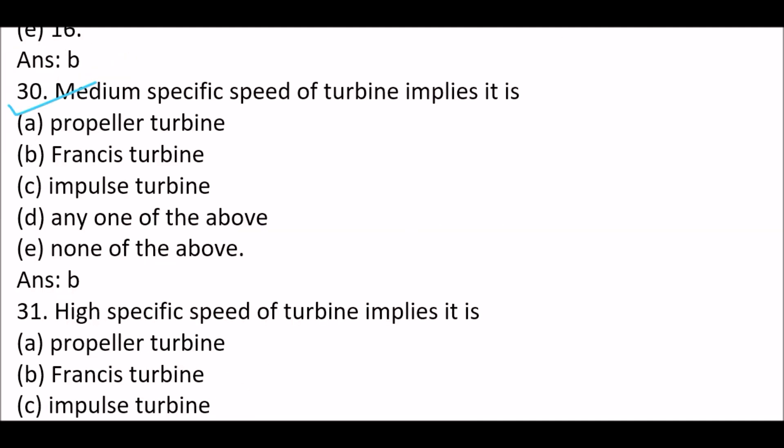Next question. Question 30. Medium specific speed of turbine implies its option B, Francis turbine.